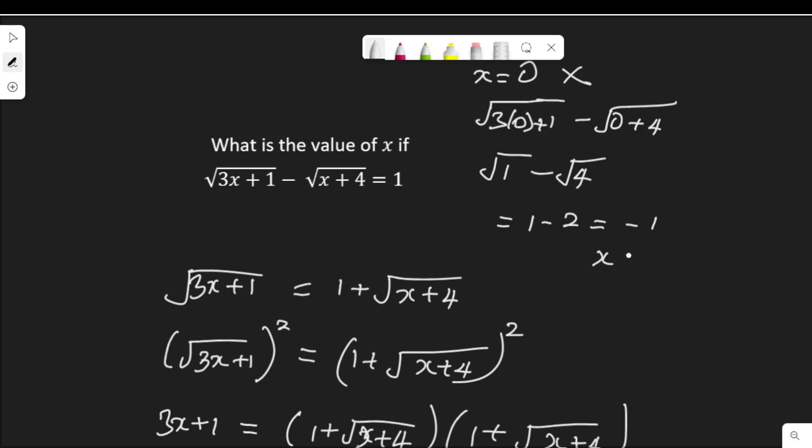The other answer is x = 5. Let's check that. Let's put 5 here. That would be √(3×5 + 1) - √(5 + 4), which is √16 - √9. Root 16 is 4, root 9 is 3. 4 - 3 is 1. So only 5 satisfies this equation.